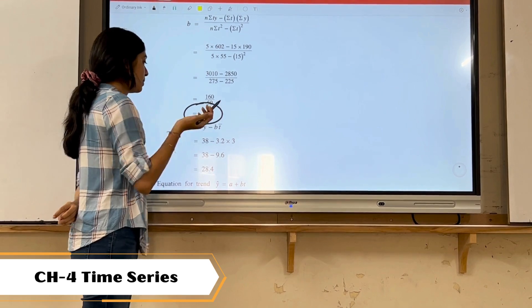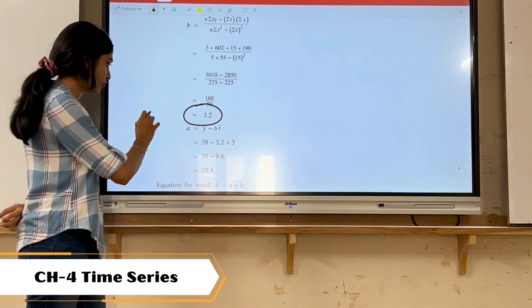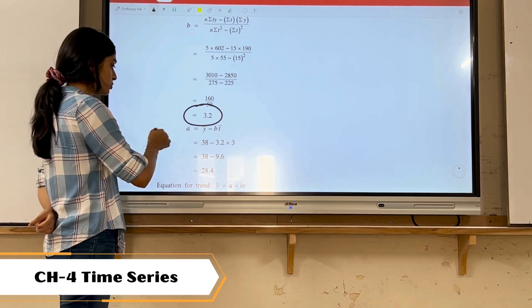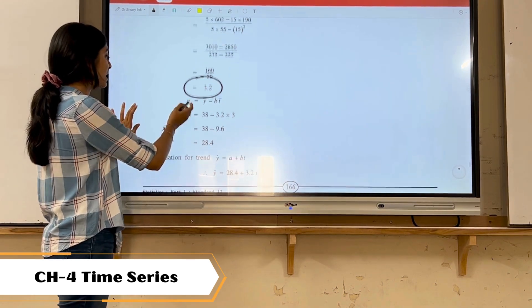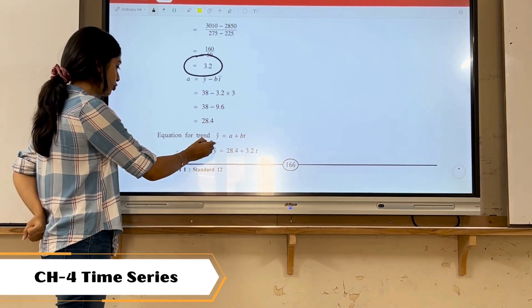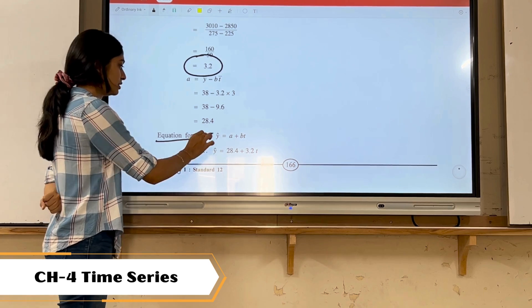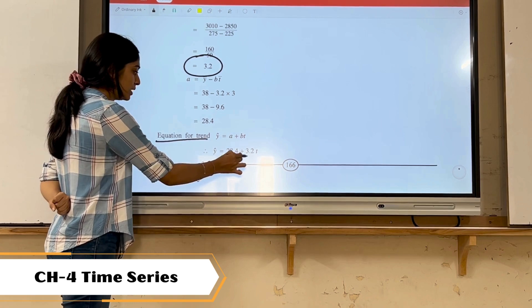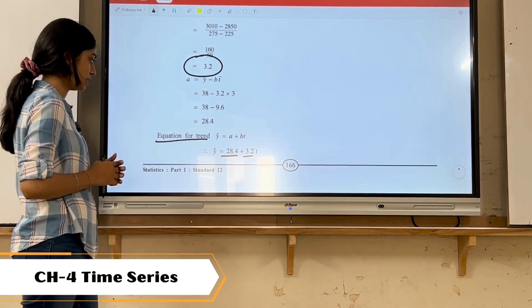Now we need to find out the value of a. The formula is y bar minus b t bar. Already we have all the values, just replace the value. You got a as 28.4. Then the equation for trend, that is y cap, equals a plus b t. Already we have the value of a, value of b, just replace the value of the equation.